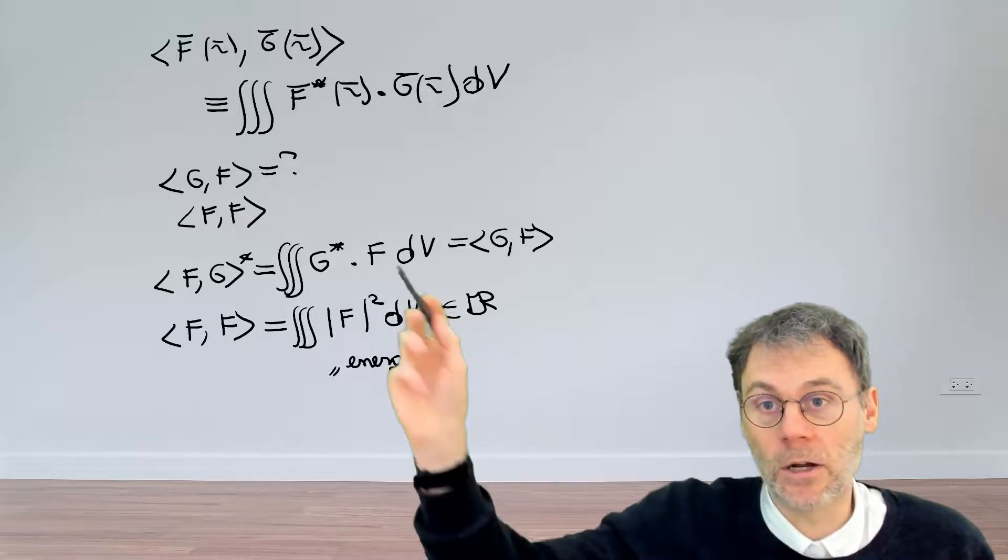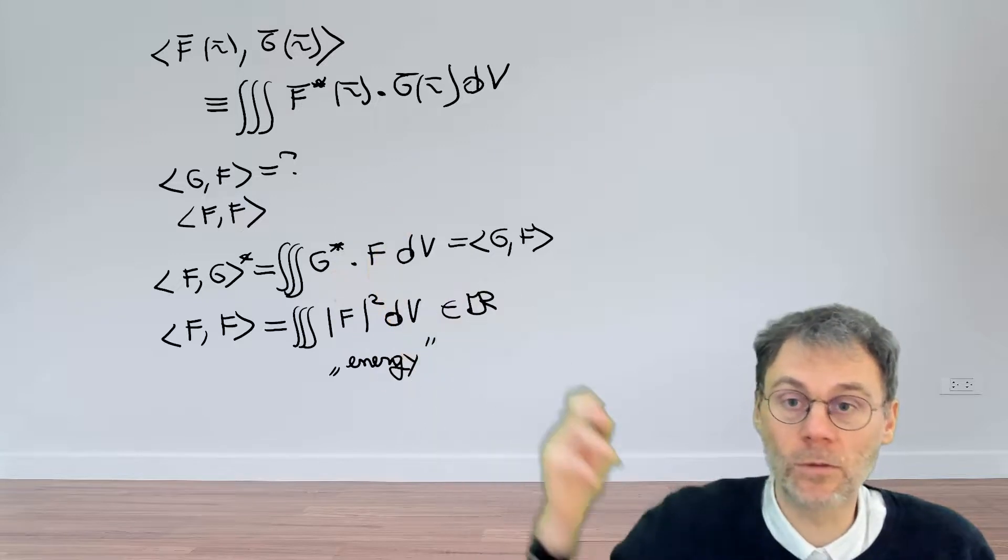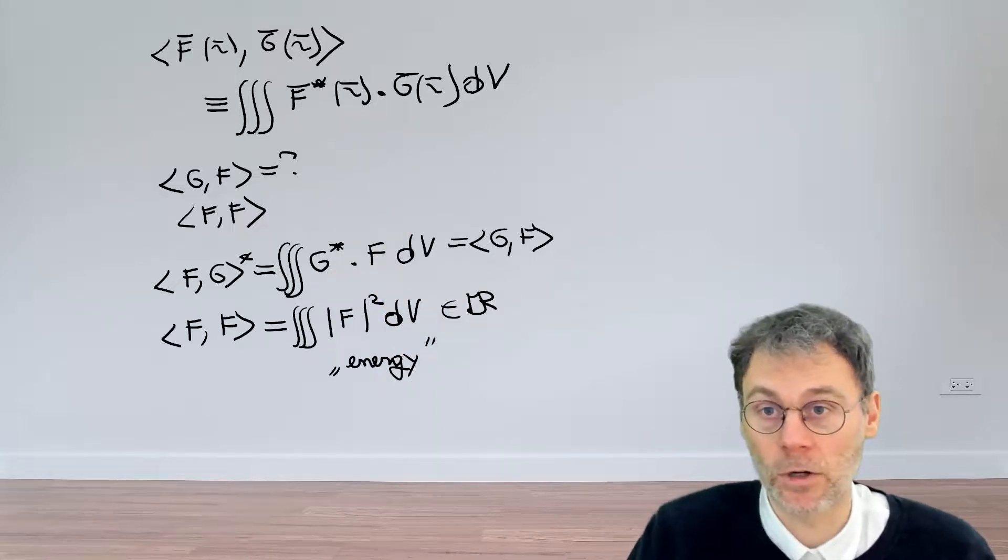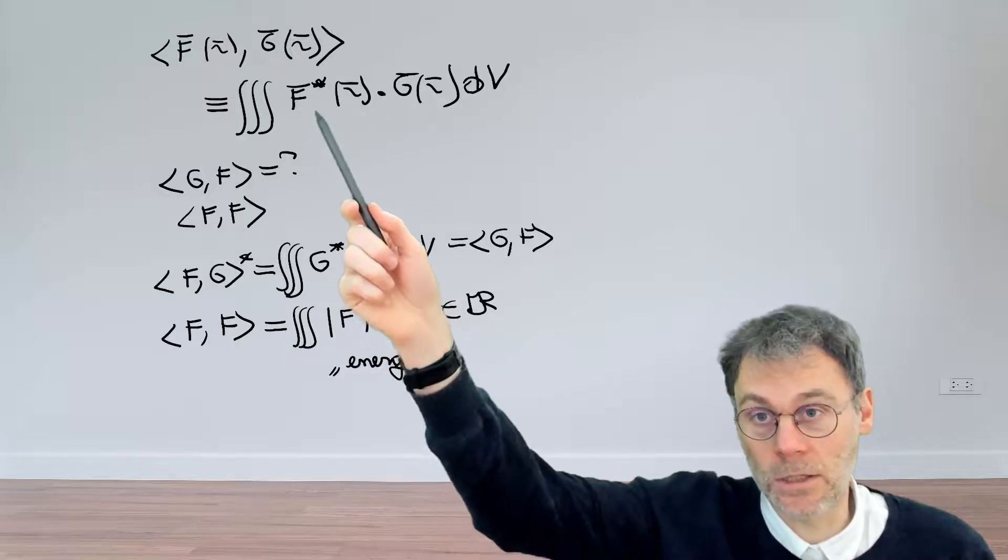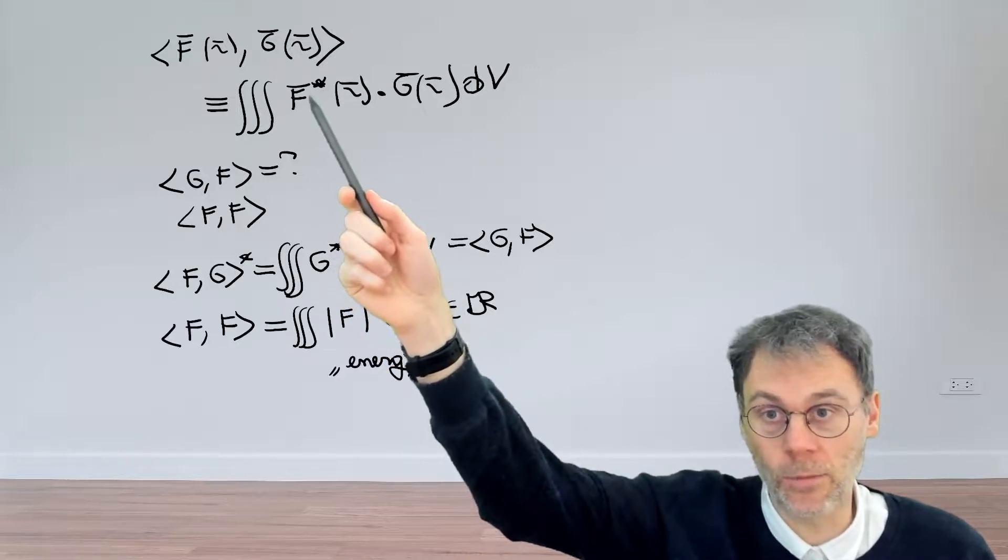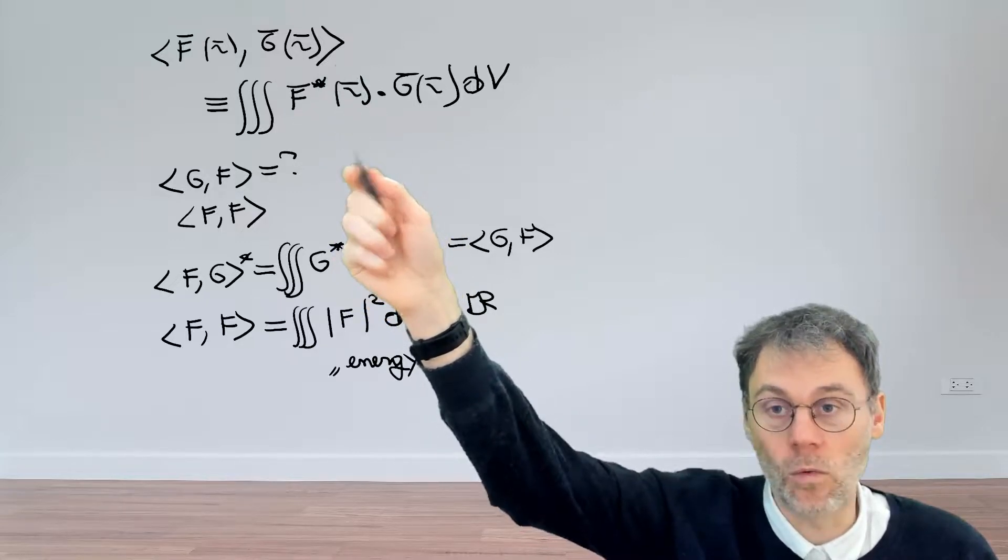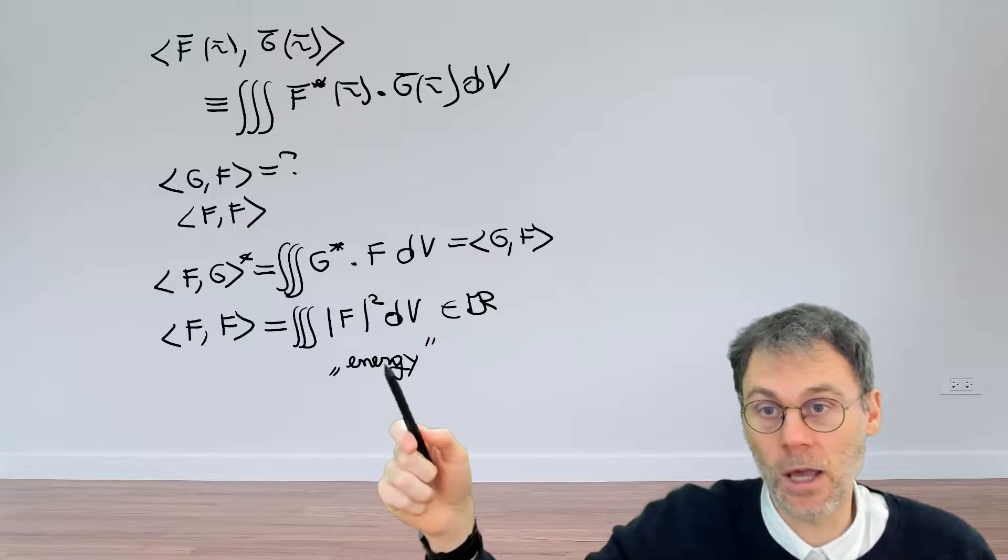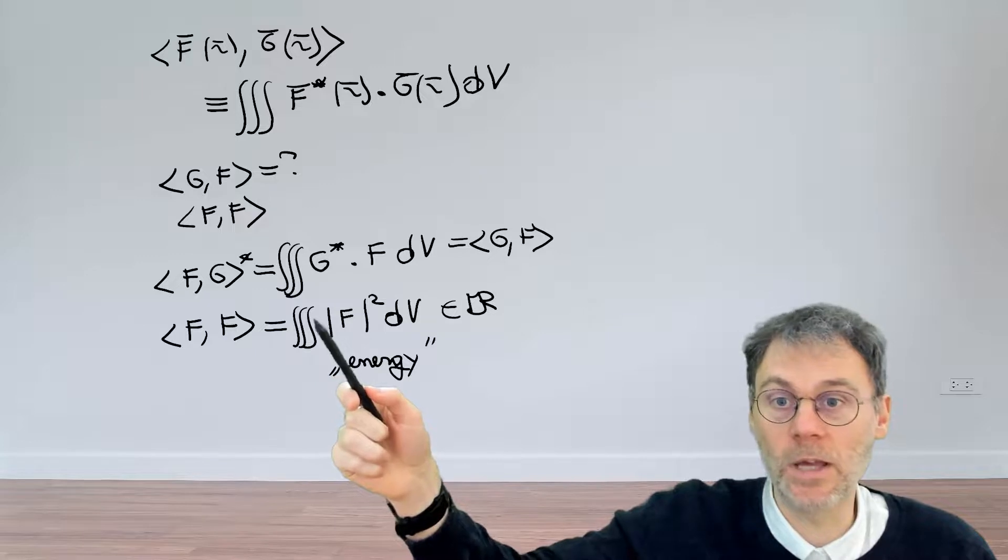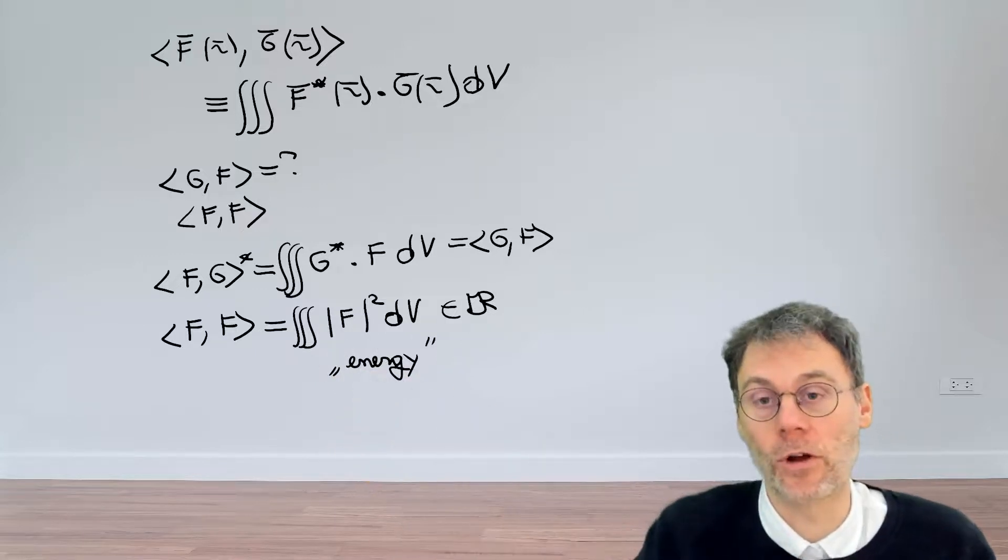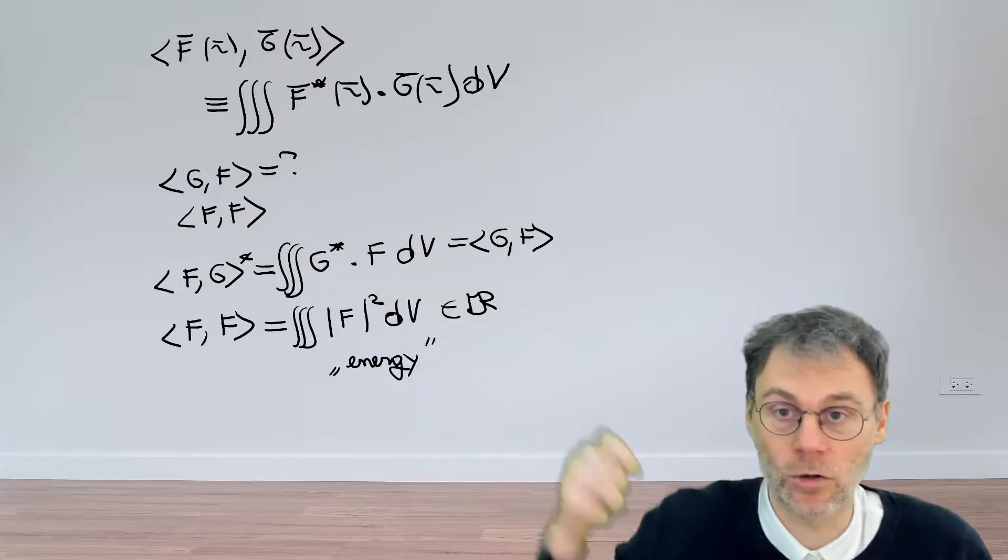Now bear in mind that in our definition up here, we basically have full degrees of freedom of how we want to define that scalar product. For example, if you really want to, you can define a scalar product without this complex conjugate over here. But people mostly like introducing this complex conjugate over here. Why? Because then, in this particular case, you can have this nice interpretation of f times f as being the energy of your function f, something which you do not have if you don't have that complex conjugate.